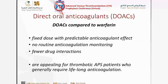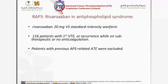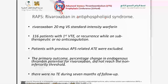Let us see whether we could use these agents in our patients. The RAPS trial explored rivaroxaban in antiphospholipid syndrome — using rivaroxaban 20 mg versus standard-intensity warfarin. They recruited 116 patients with first VTE or recurrent while on subtherapeutic or no anticoagulation. Patients with previous APS-related arterial thrombosis were excluded — this is very important. Unfortunately, this study did not meet its primary endpoint of change in endogenous thrombin potential for rivaroxaban. But there were no thrombotic events during the seven months of follow-up.